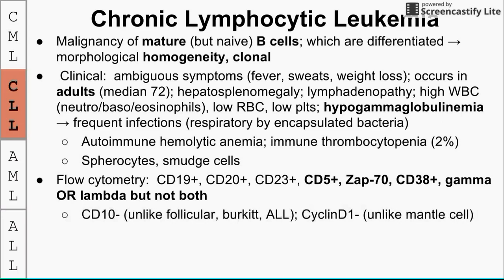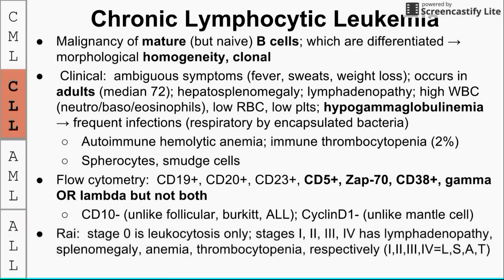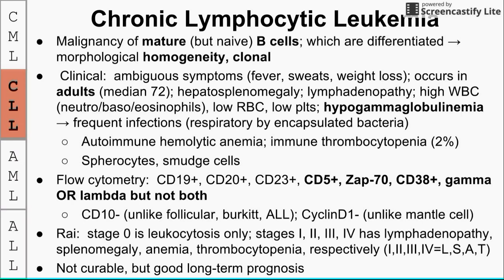CLL is CD10-negative, which differentiates it from follicular lymphoma, Burkitt's lymphoma, and ALL. It's also cyclin D1-negative, distinguishing it from mantle cell lymphoma. The Rai classification stages CLL from 0 to 4: all stages have leukocytosis, and stages 1–4 add the symptoms LSAT — lymphadenopathy, splenomegaly, anemia, and thrombocytopenia. There is no cure for CLL, but long-term prognosis is relatively good; studies show treatment offers similar outcomes to no treatment, so palliative care is often the best option.